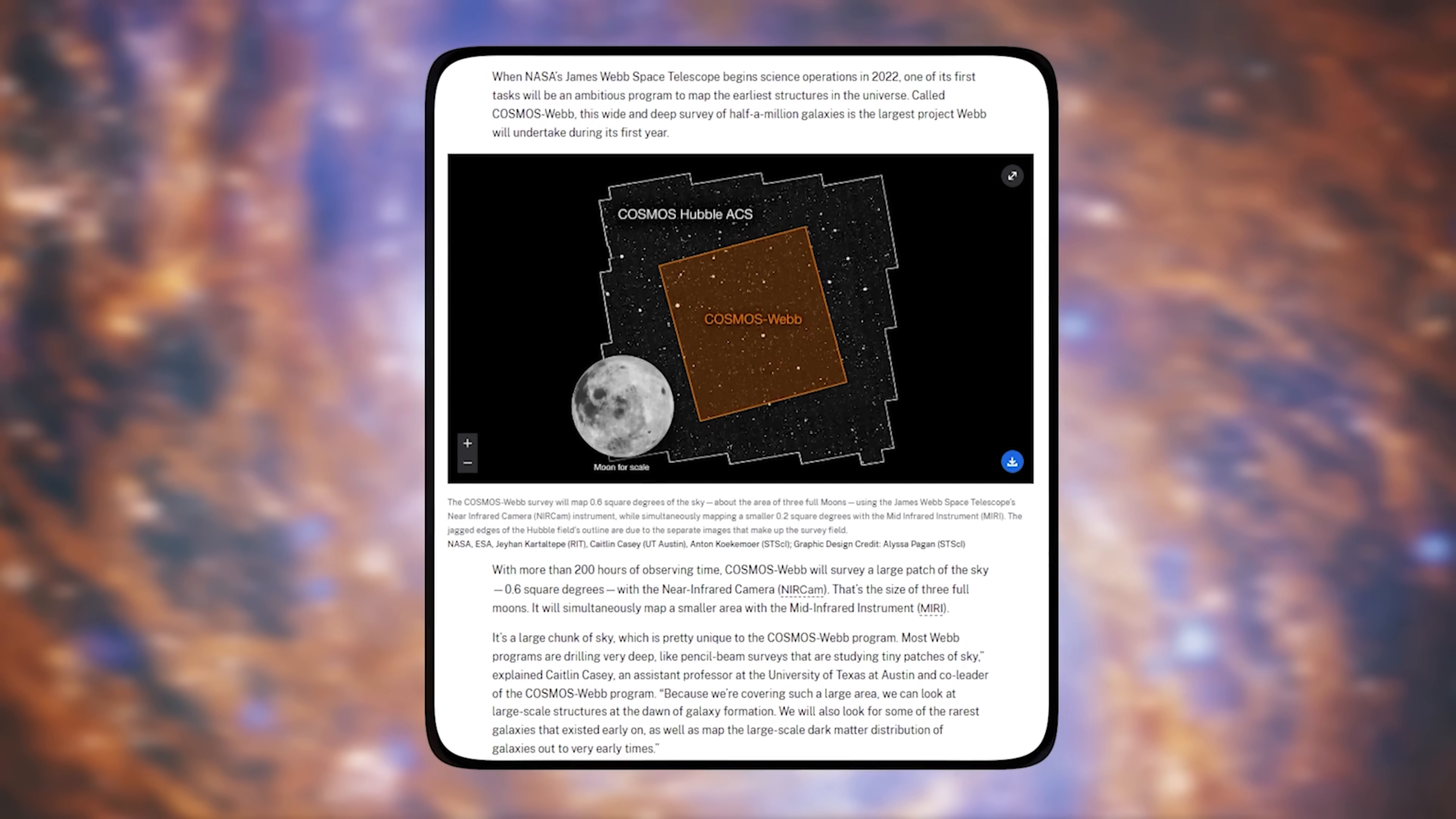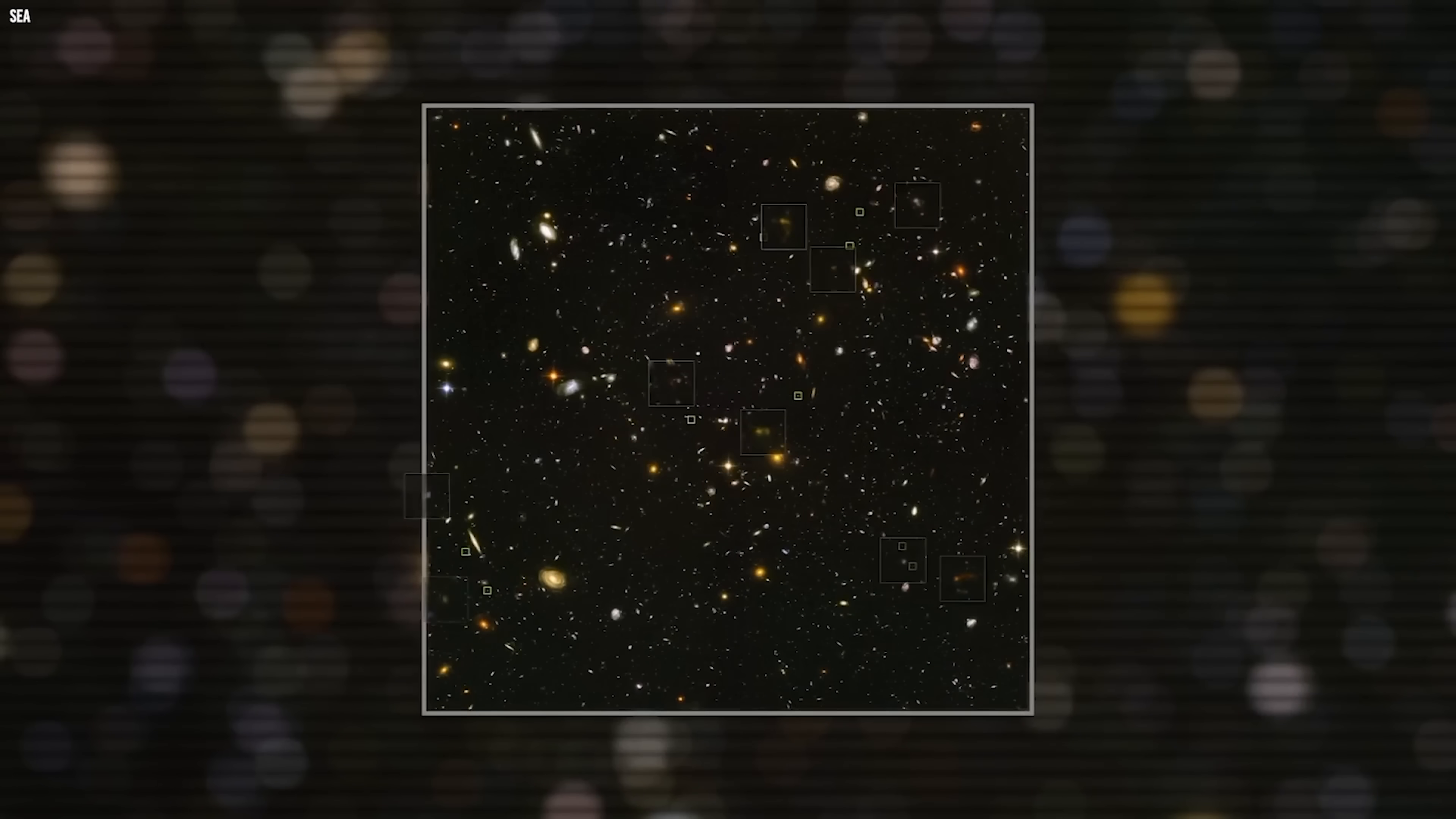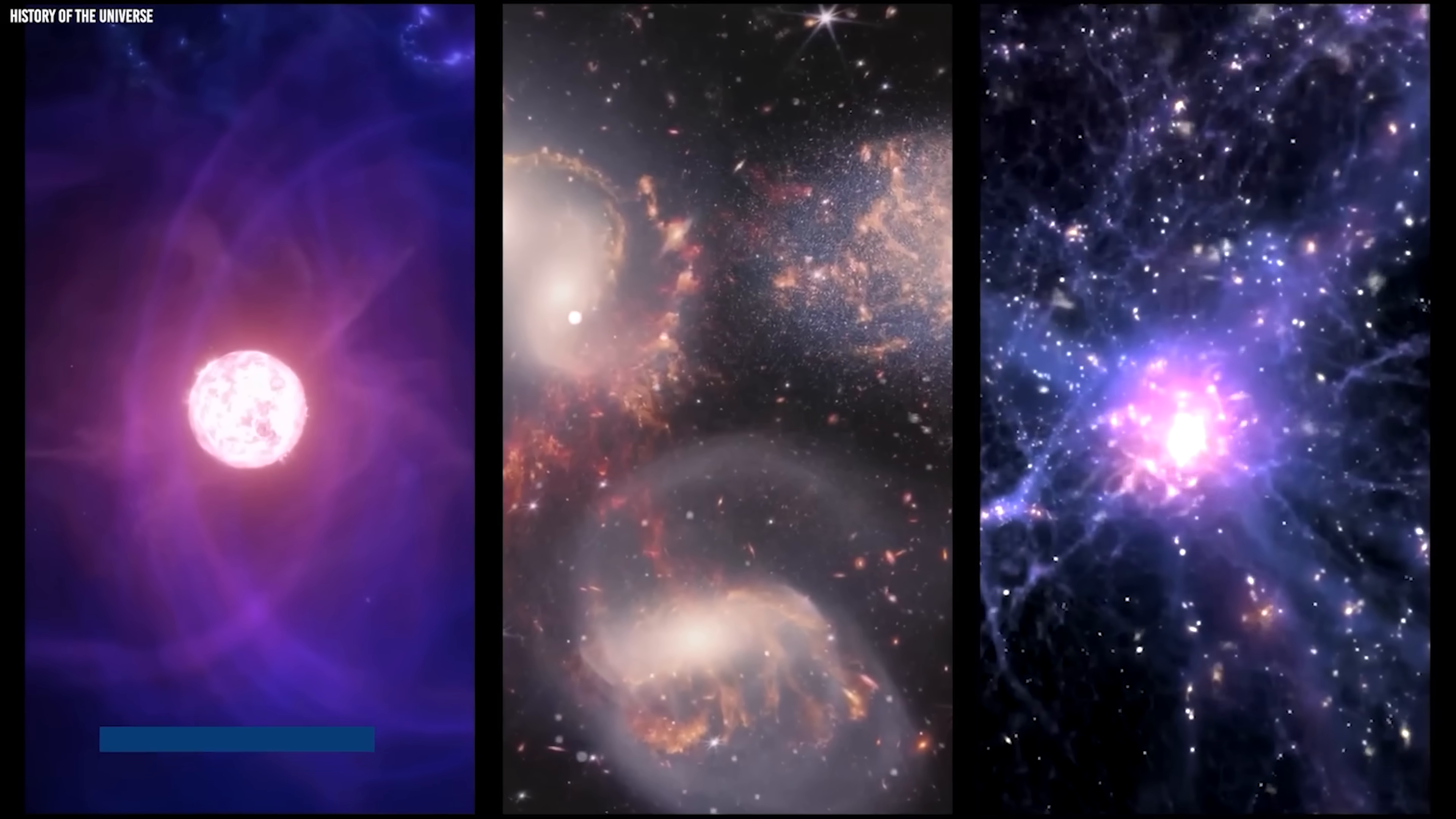The Cosmosweb project became the largest observing program awarded to JWST in its very first year. Over 250 hours were devoted to scanning a region of sky nearly three times the size of the full moon. Thousands of exposures were carefully stitched together into one seamless panorama, creating the deepest and most expansive map of the universe ever released. A public catalog of more than 780,000 galaxies.